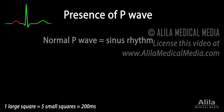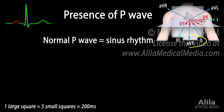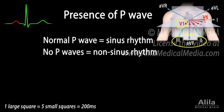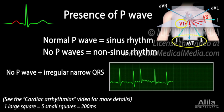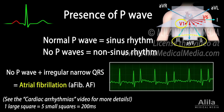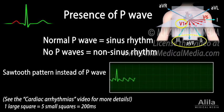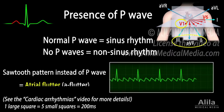P wave represents depolarization of the atria initiated by the SA node. Presence of a normal P wave therefore indicates sinus rhythm. P waves are most prominent in Leads 2, 3, AVF, and V1. Absence of P waves indicates non-sinus rhythms. Absence of P waves and presence of irregular narrow QRS complexes are the hallmark of atrial fibrillation. The baseline may be undulating or totally flat. A sawtooth pattern instead of regular P waves signifies atrial flutter.